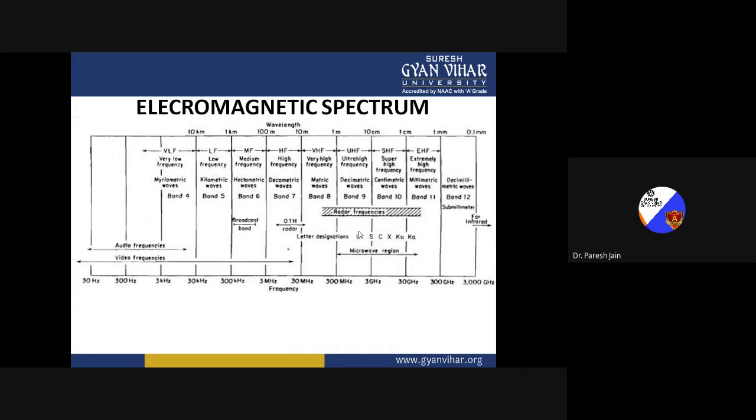The medium frequency range is also known as the broadcast band, and the high frequency band is also known as the OTH (Over-The-Horizon) radar band. The latter designations in radar frequency bands are L, S, C, X, K, Ku, and Ka bands — this is known as the microwave region or microwave window. This completes our overview of the electromagnetic spectrum, through which we understand the basic frequency bands with their corresponding wavelengths.